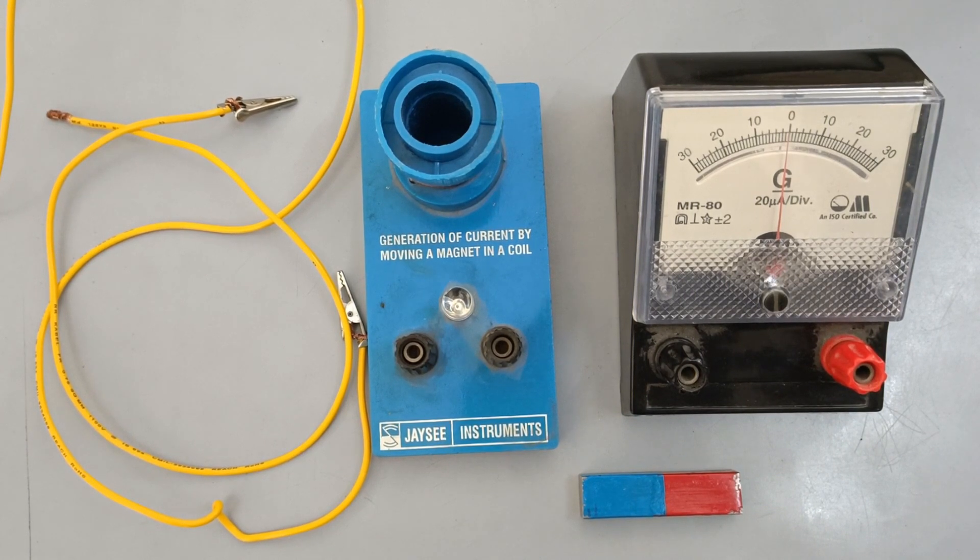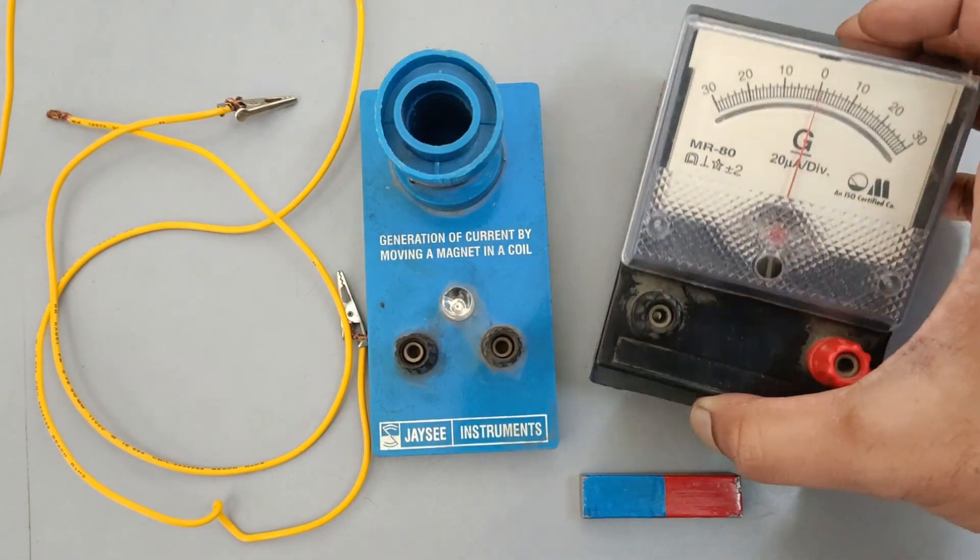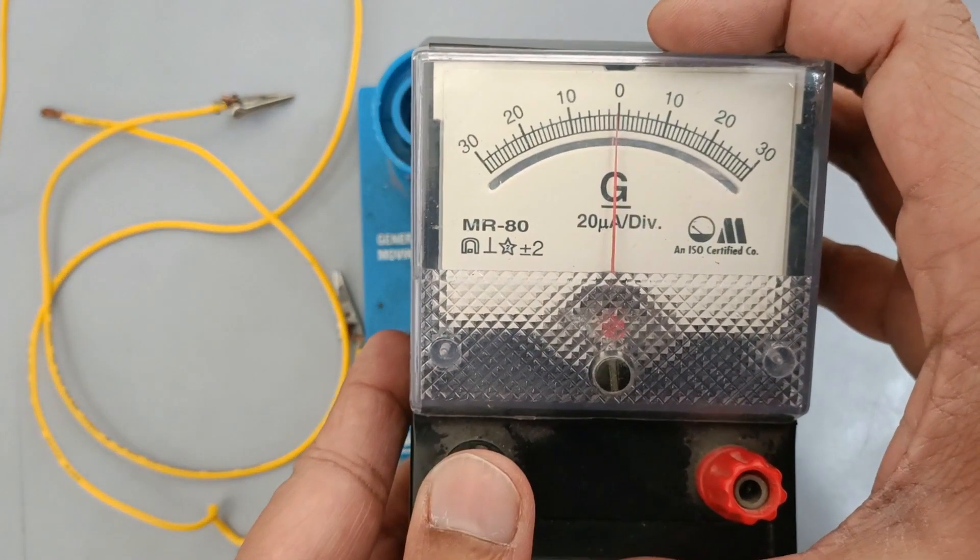This is a classic activity for standard 10 to 12 students. We will require a solenoid, that is the coiled wire, connecting wires, a bar magnet, and a galvanometer.